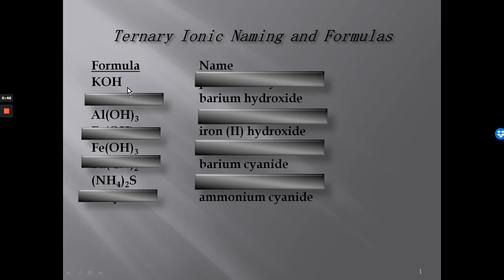The first formula we're going to look at is a group one metal and the polyatomic ion OH. We see that K is potassium and OH is the polyatomic ion, giving us potassium hydroxide.